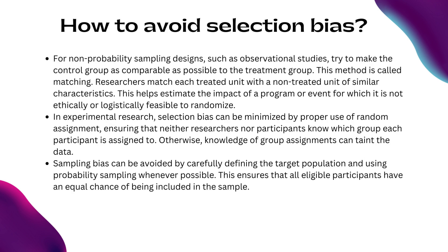Selection bias can be avoided as you recruit and retain your sample population. For non-probability sampling designs, such as observational studies, try to make the control group as comparable as possible to the treatment group. This method is called matching. Researchers match each treated unit with a non-treated unit of similar characteristics. This helps estimate the impact of a program or event for which it is not ethically or logistically feasible to randomize.